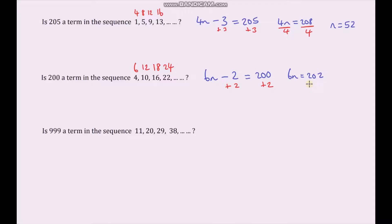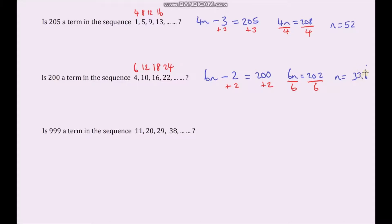Dividing both sides by 6 — using my Casio FX83 — gives n equals 33.6 recurring. This time 200 is not in the sequence because we've got a decimal number. We can't have a 33.6 recurring term; we can have a 33rd or 34th term, but not a term number like this. So the answer is no.